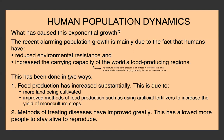The two ways we've done this are: increased food production due to more land being cultivated and improving methods of food production, such as using artificial fertilizers and asexual reproduction to increase the yield of monoculture crops. Monoculture means focusing on growing just one type of crop.